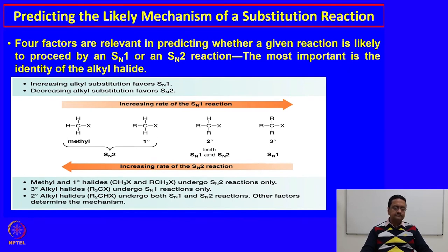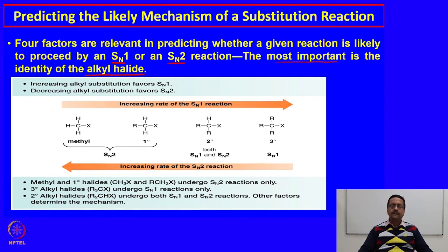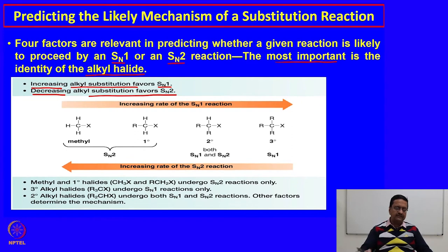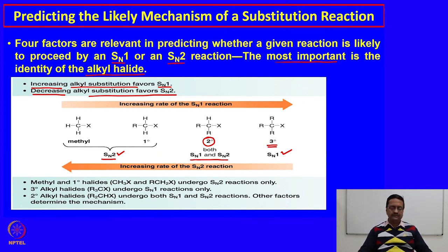Four factors are relevant in predicting whether a given reaction is likely to proceed by SN1 or SN2 reaction pathway. The most important is the identity of the alkyl halide. Increasing the alkyl substitution favors SN1; decreasing the alkyl substitution favors SN2. So a more substituted alkyl halide will prefer SN1, a less substituted alkyl halide will prefer SN2, and the intermediate secondary alkyl halide can follow either SN1 or SN2 depending on other influencing factors.